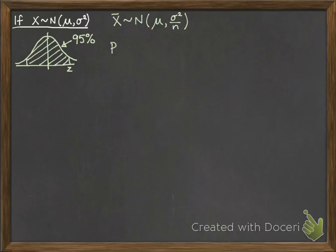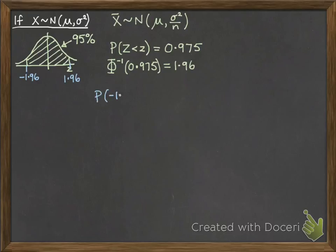We have this z value here, where the probability that z is smaller than this value is 0.975. Because if there's 95% in the middle, we'd have 2.5% on either side, giving 97.5%. If we use our normal tables to work backwards, we find the inverse φ of 0.975 and get 1.96. So that value of z is 1.96 and over here we'd have -1.96. The probability that z is between -1.96 and +1.96 is 0.95.